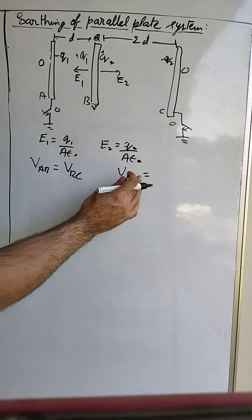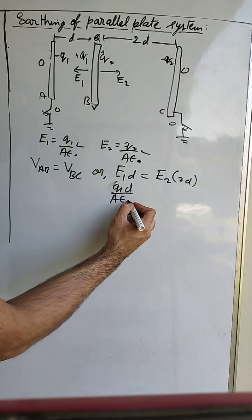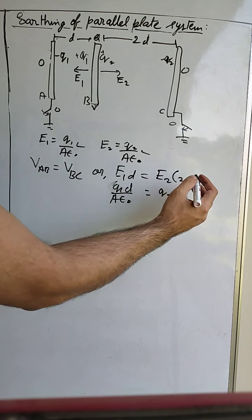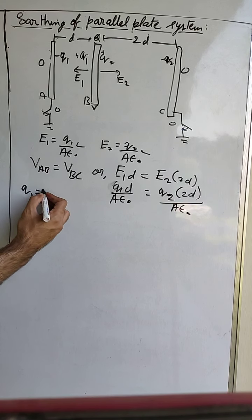Putting the formula, VAB can be written as E1·D, since the electric field is E1 and the distance between A and B is D. Similarly, VBC = E2·2D. Substituting the values of E1 and E2, we get Q1·D/(Aε₀) = Q2·2D/(Aε₀).